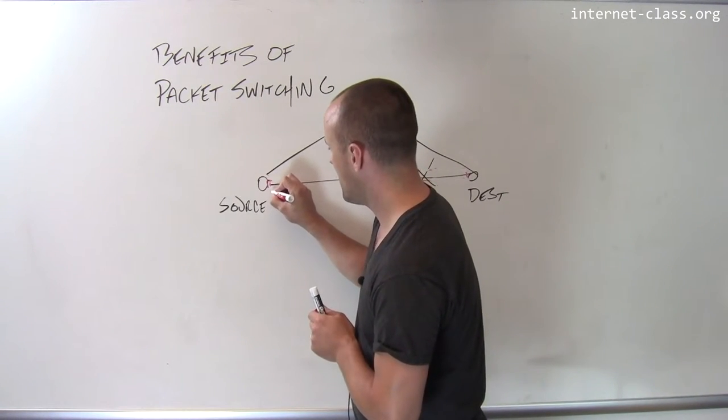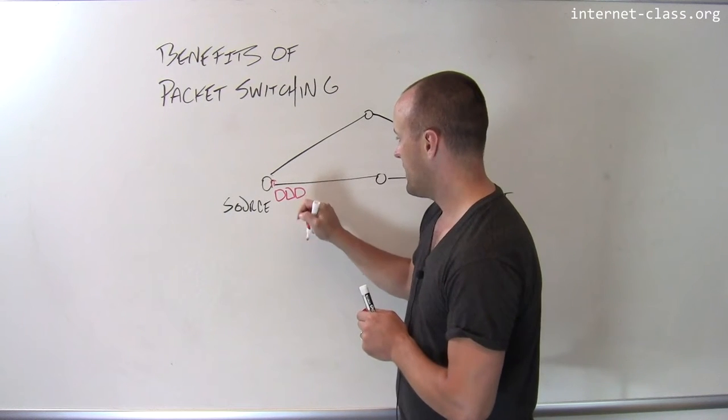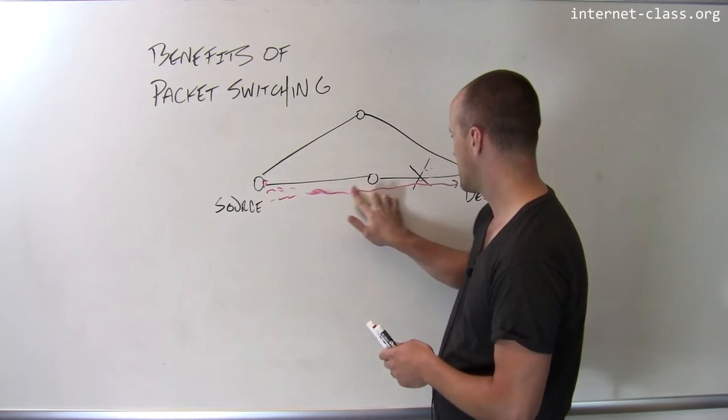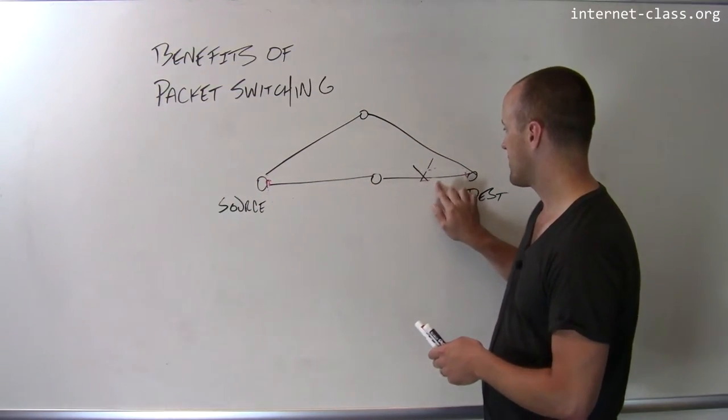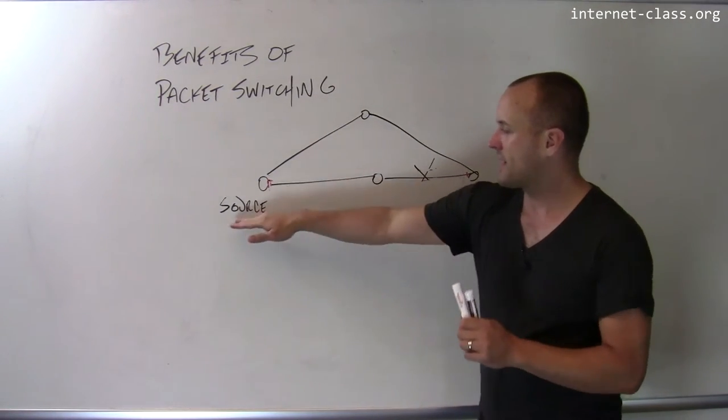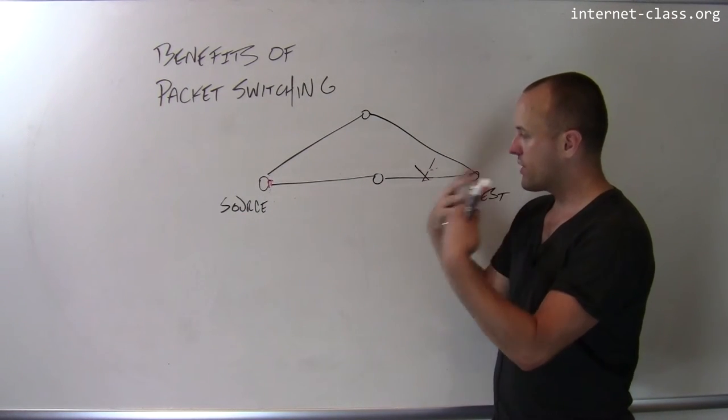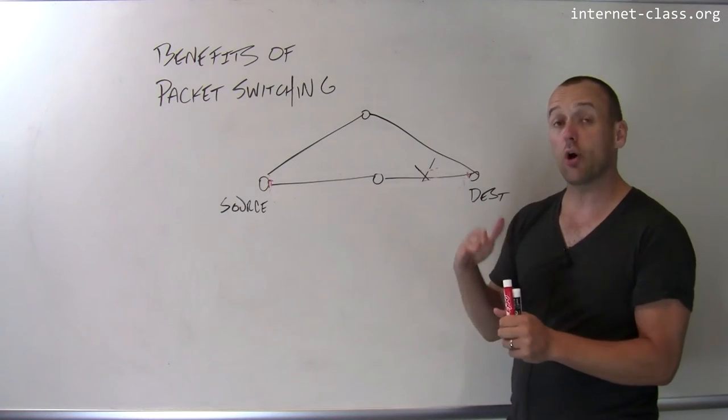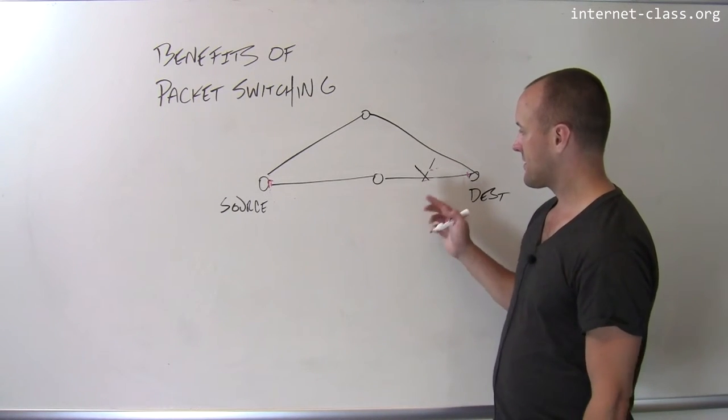So imagine that the source sends a few packets to the destination, and these packets travel along the network. Once they reach the destination, they're gone. And there's really no connection, there's no network resources that still need to be left there because these two nodes are communicating. The resources are provisioned only when needed, and they can be torn down when required.